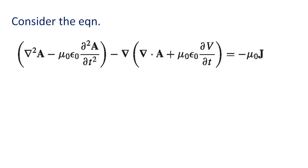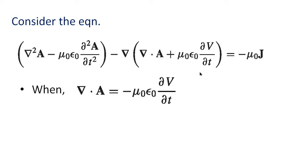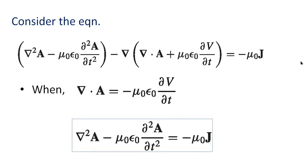Now consider the equation: del-squared A minus mu-zero epsilon-zero partial-squared A by partial t-squared, minus del of del dot A plus mu-zero epsilon-zero partial V by partial t, equals minus mu-zero J. Substituting the Lorentz gauge condition, del dot A equals minus mu-zero epsilon-zero partial V by partial t, the second term becomes zero — minus mu-zero epsilon-zero partial V by partial t plus mu-zero epsilon-zero partial V by partial t equals zero. The equation then simplifies to: del-squared A minus mu-zero epsilon-zero partial-squared A by partial t-squared equals minus mu-zero J.